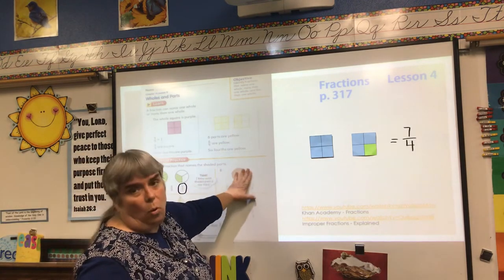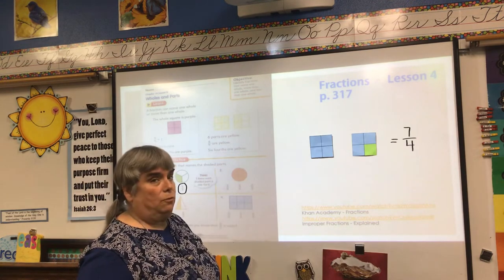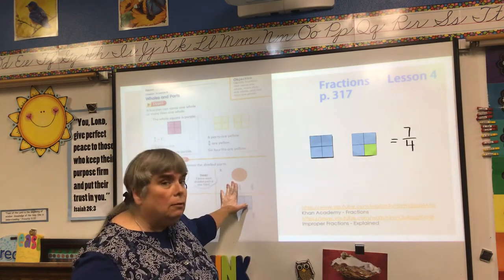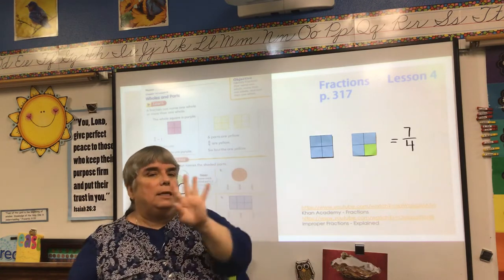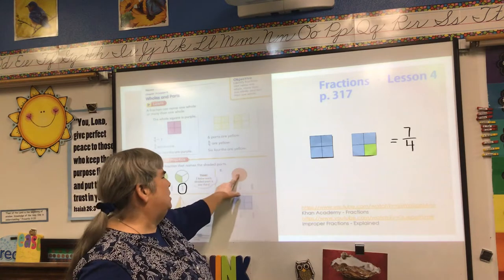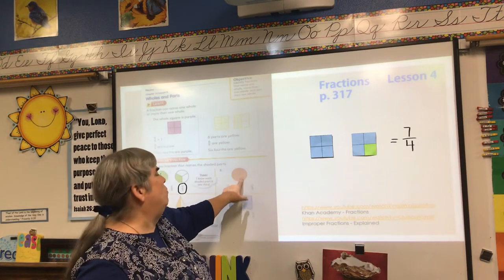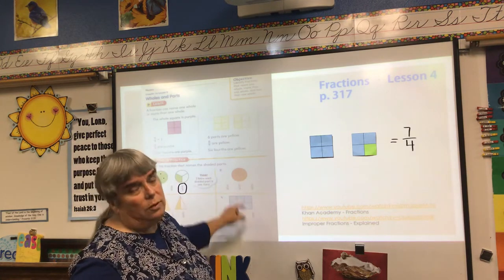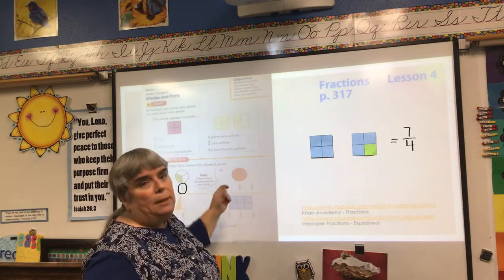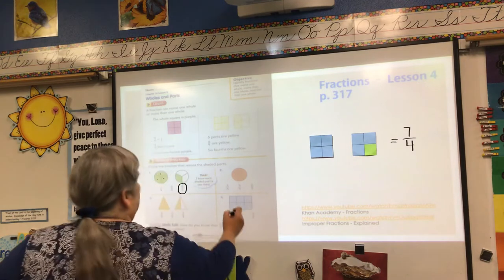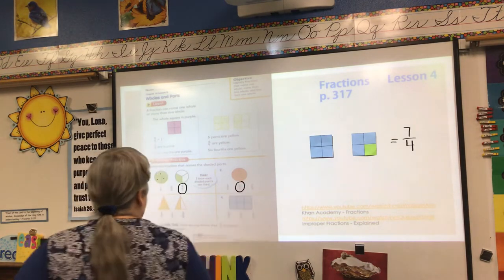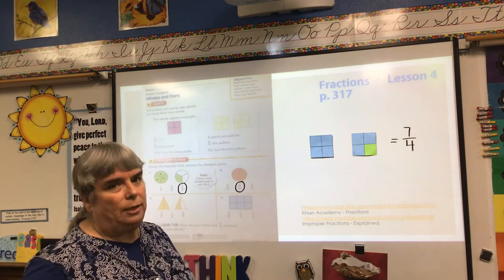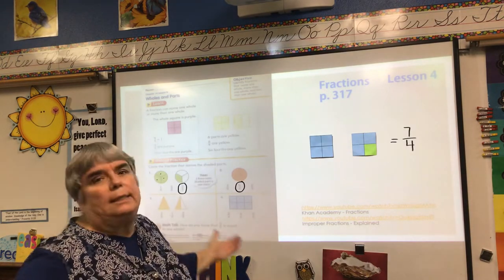Number two: we have a whole circle divided into fourths. This is a circle, and it's still fourths because it's a whole shape divided into four equal parts. All four are shaded in, so what I have is four-fourths. We could also say this shape is one whole, but because that's not an option, we're going to say four-fourths. When you have the same number over the same number, it's one whole — that could be 400 over 400 and it would still equal one whole.